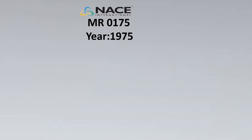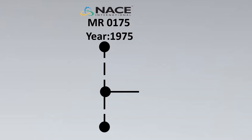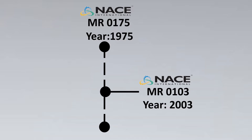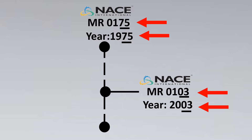NACE MR0175 was first made in the year 1975, and then further down the line, with the need especially for refineries, MR0103 was made. There is an interesting observation here: the last two digits of MR0175 match the year it was created. Similarly, the last two digits of NACE MR0103 match the year it was made.